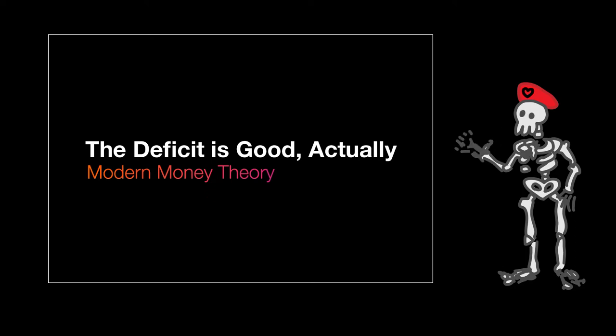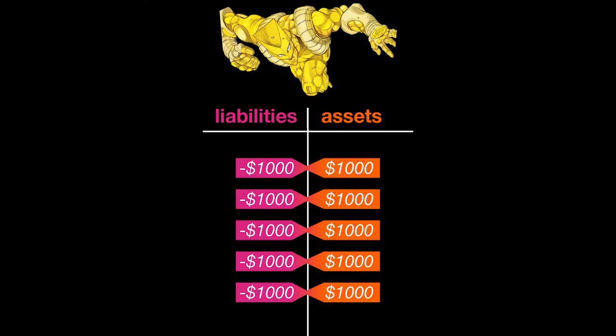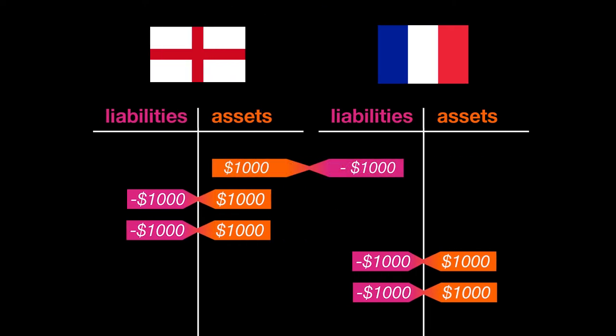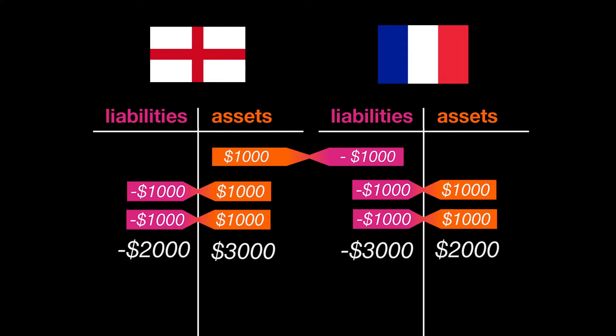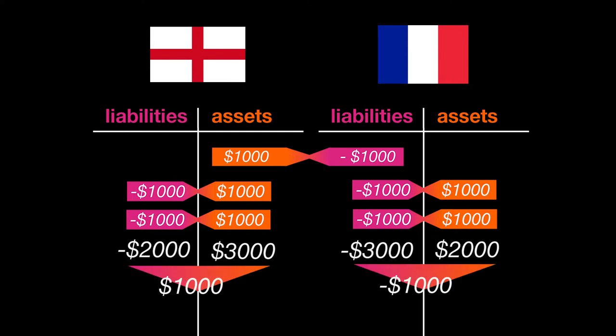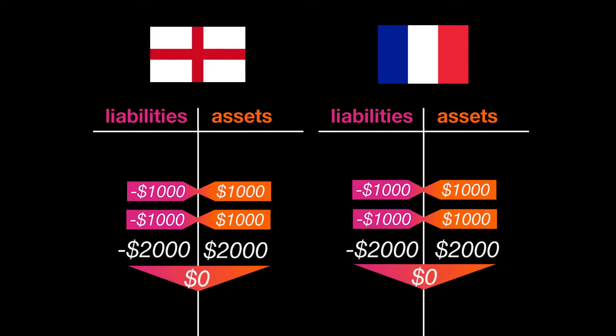Us — the private sector! Remember that the total value of all assets and liabilities in the world has to be zero. But what if we cut the world economy up into countries? Within a single country, all the assets and liabilities owned by the people, businesses, and governments don't have to add up to zero. It's possible, for example, that the people of France owe money to the people of England. But once you remove this foreign part, the rest of it has to add up to zero.